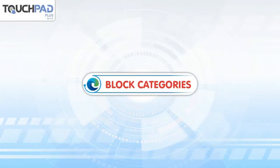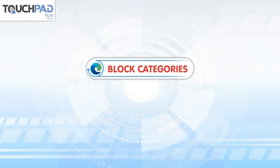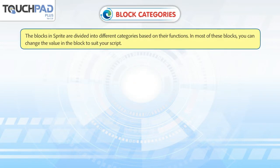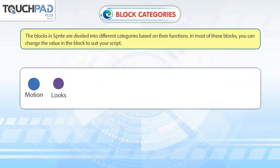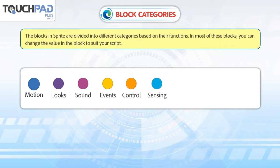Block Categories. The blocks in Scratch are divided into different categories based on their functions. In most of these blocks, you can change the value in the block to suit your script. The categories are: Motion, Looks, Sound, Events, Control, Sensing, Operators, Variables, and My Blocks.